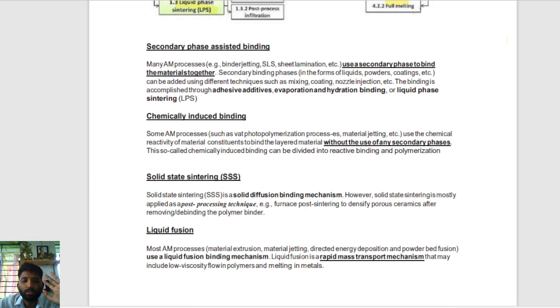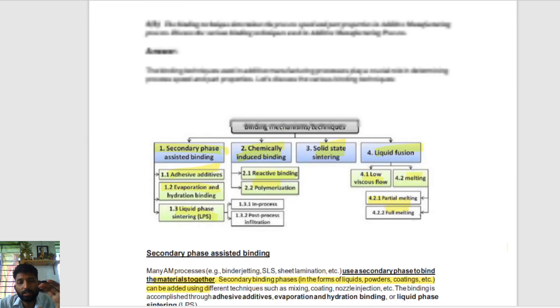We have discussed here some processes: secondary phase assistant binding is there, which uses the secondary phase to bind the material together. Chemical induced binding is there, solid substrate sintering, liquid fuse binding is there. You can write this one as an answer for that.